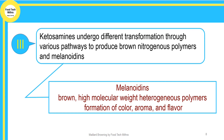Melanoidins have a very strong multi-flavor profile. They are a high molecular weight heterogeneous brown polymer, responsible for the brown color, aroma, and flavor of products that undergo the Maillard reaction. Melanoidins are found in food products such as bread crust and all other bakery products. In roasted coffee beans, the quantity of melanoidins is up to 25 percent, and this amount increases with further roasting.